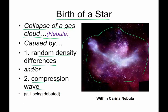Let me explain. When I say random density differences, if you look at this picture, out in this area here there is not a lot of gas and dust — it's kind of an empty zone, there's not as much there. You look at areas like that and you can tell there's a higher density of matter.